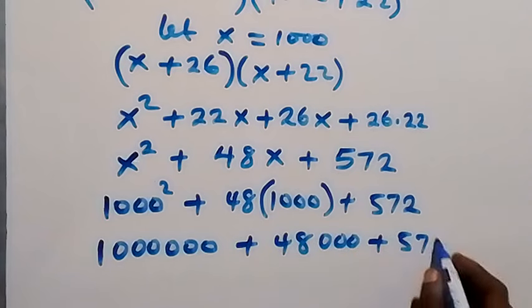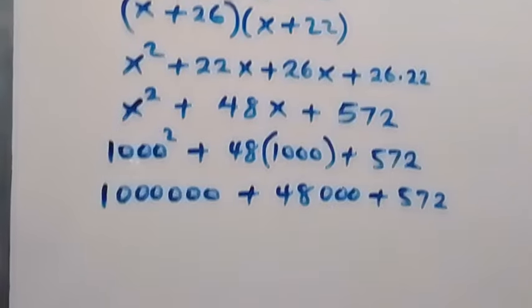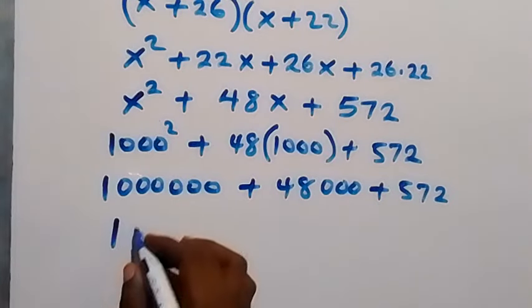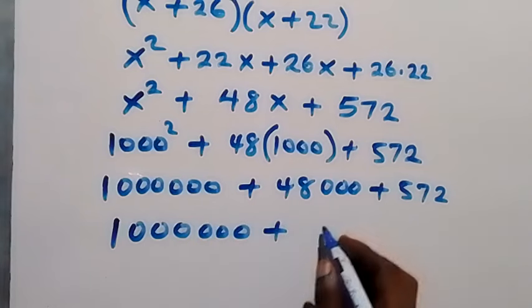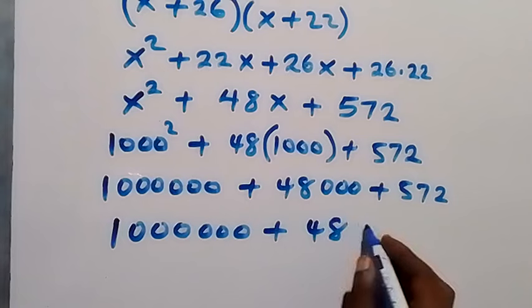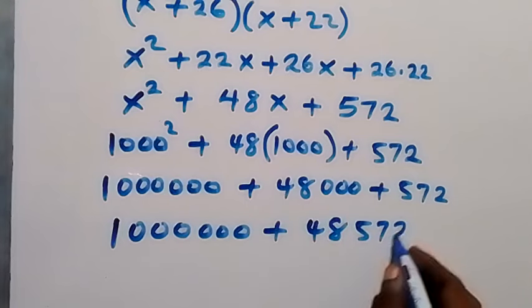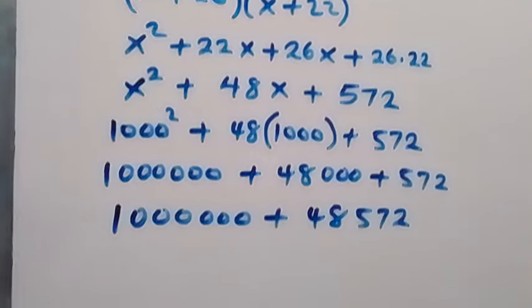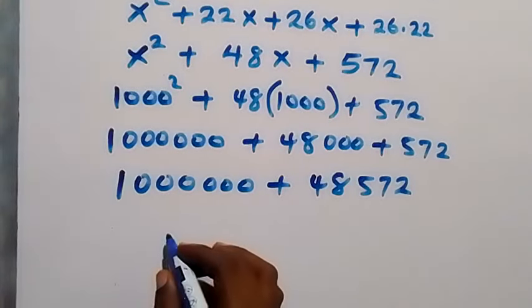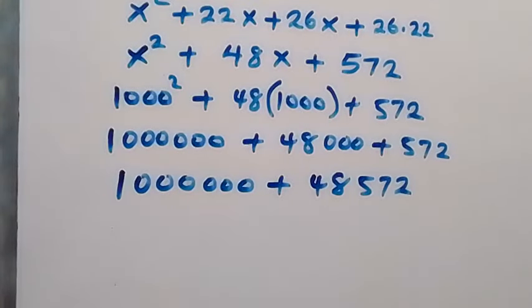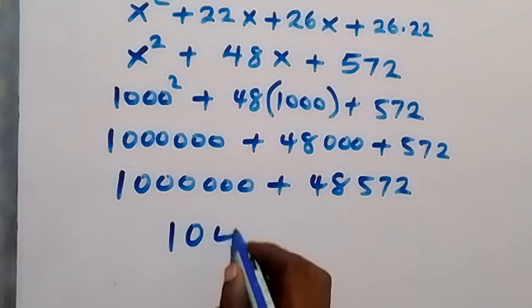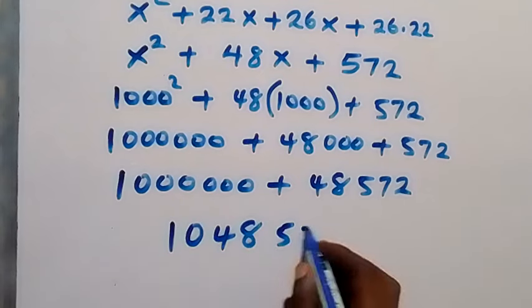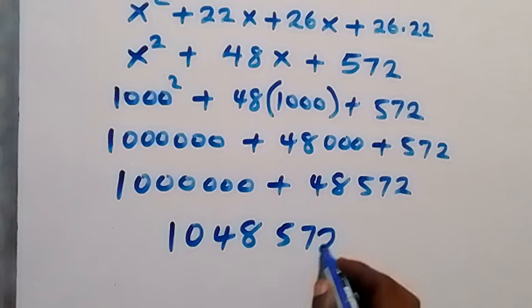1000 squared gives us 1 million, plus 48,000, plus 572. We have 1 million here, then plus when we sum this together that gives us 48,572. We can add it together with 1 million and this gives us 1,048,572.